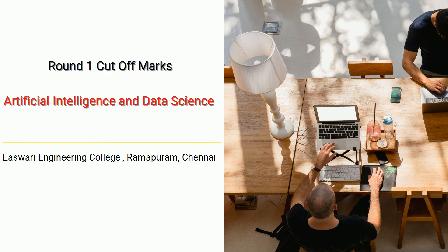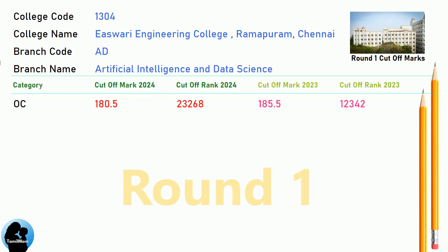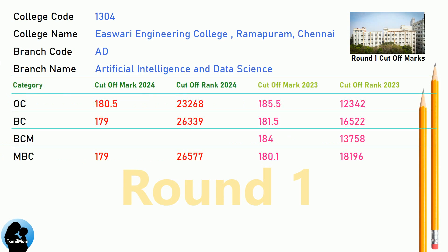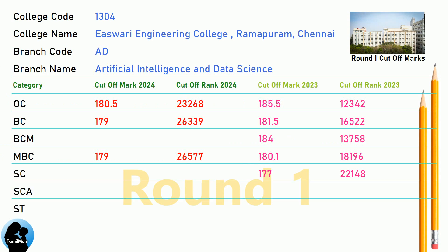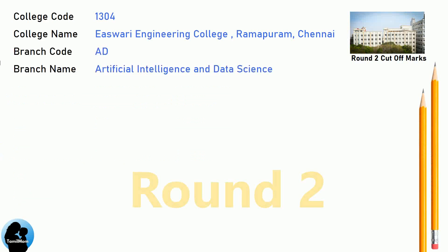DNA Round 1 Cut-Off for Eshwari Engineering College in Artificial Intelligence and Data Science. DNA Round 2 Cut-Off for Eshwari Engineering College in Artificial Intelligence and Data Science.